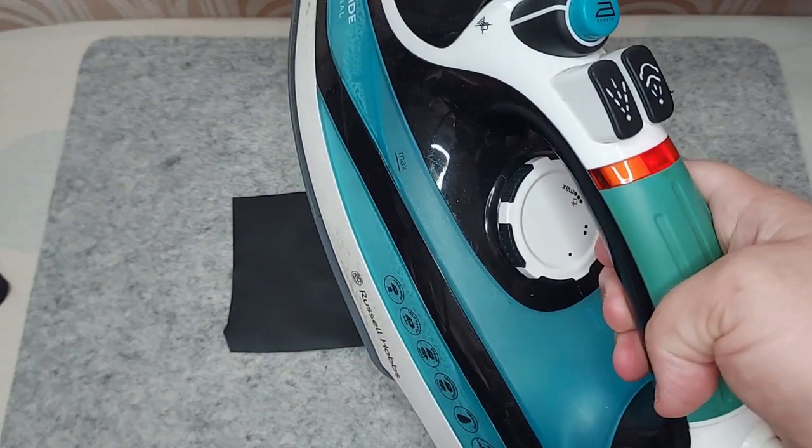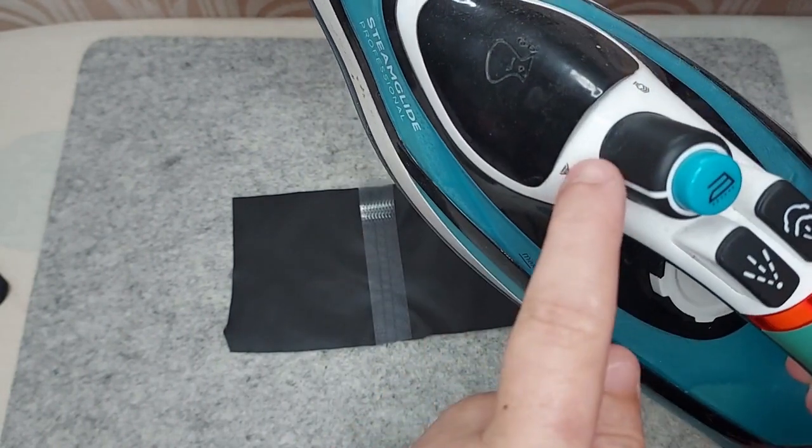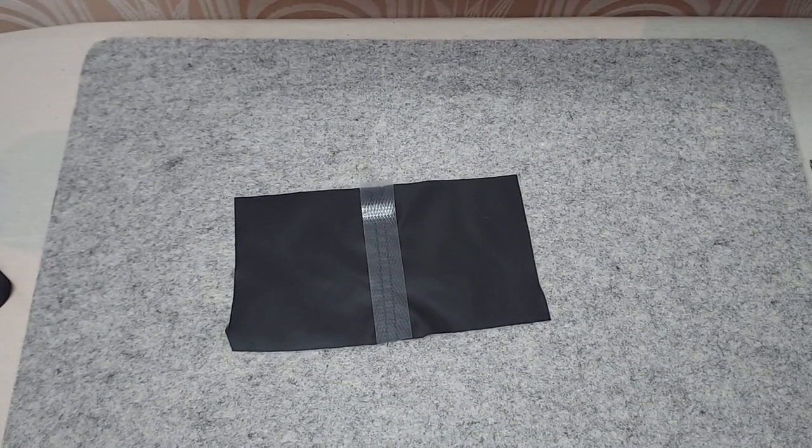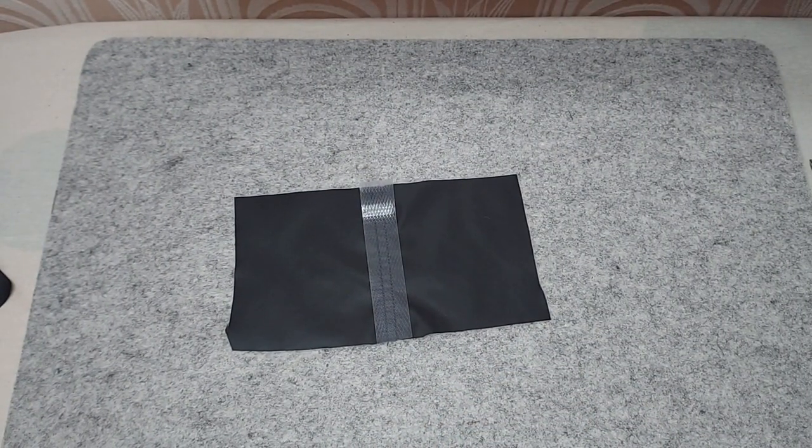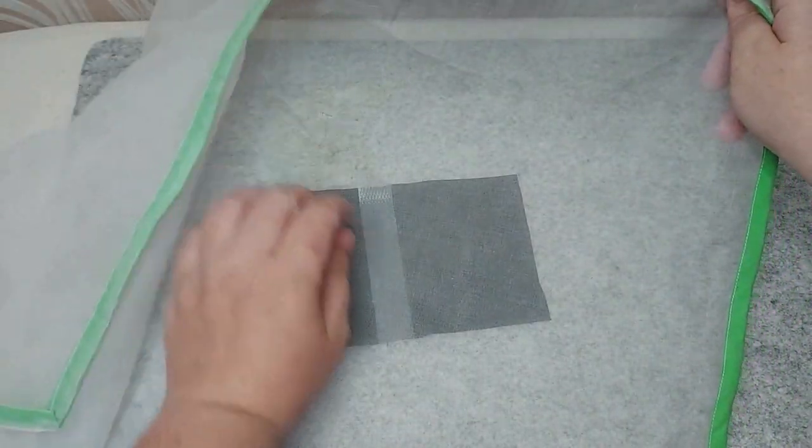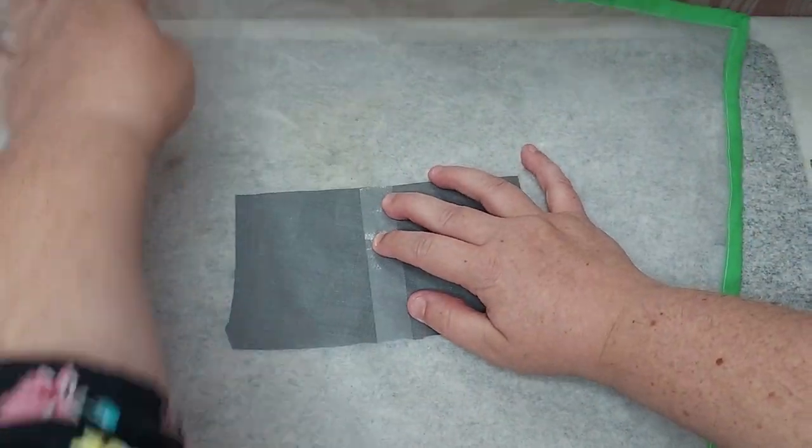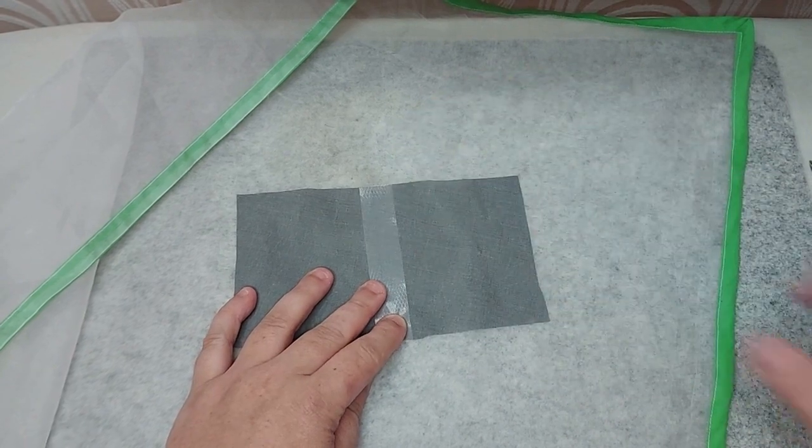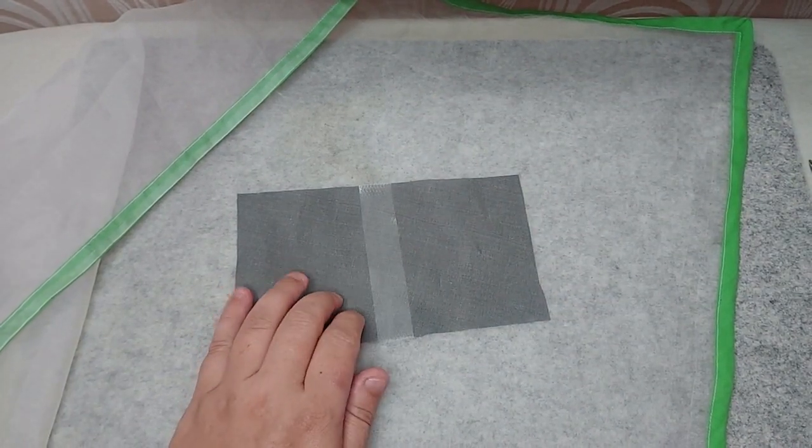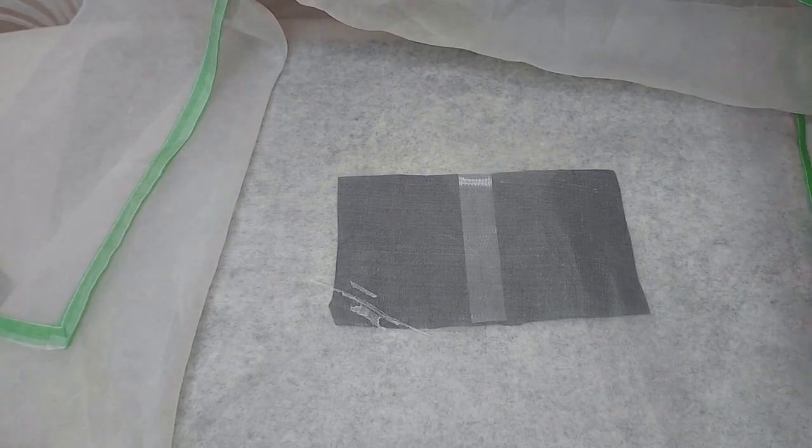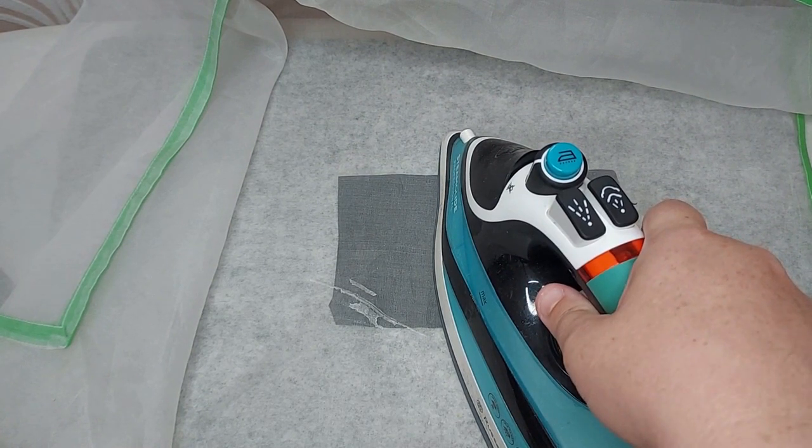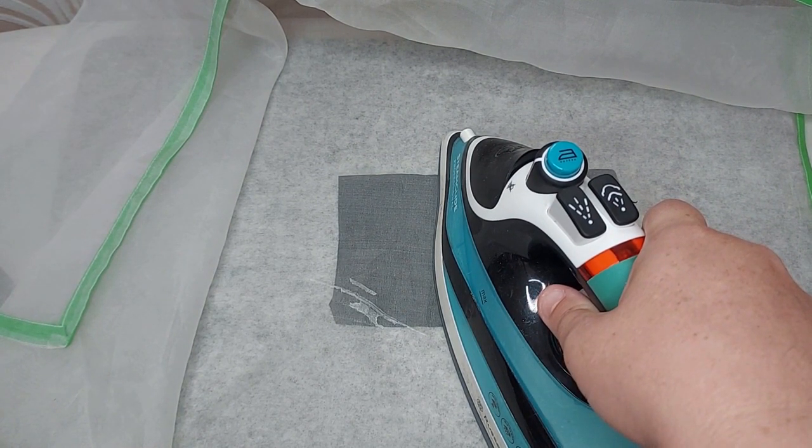With your iron set to the lowest possible setting and without steam, place the seam seal tape and pressing cloth in place. Place the iron onto the seam for six seconds and remove the heat.